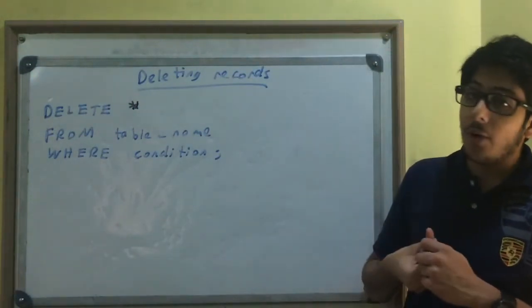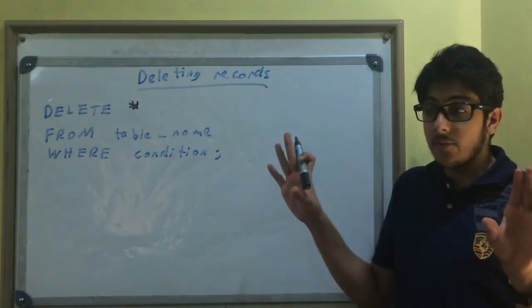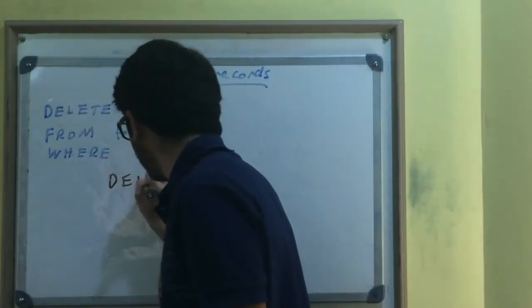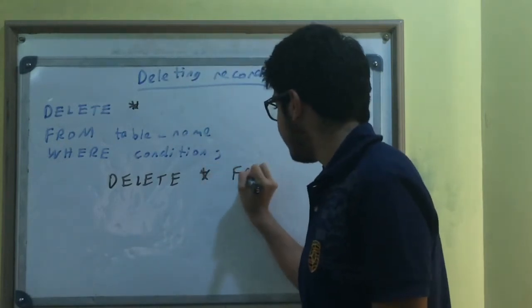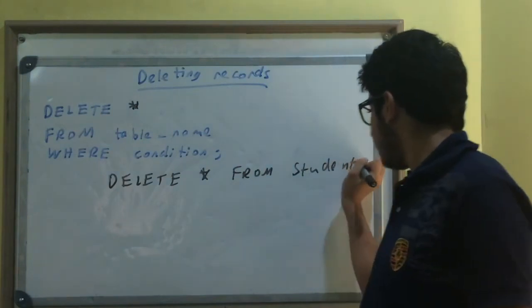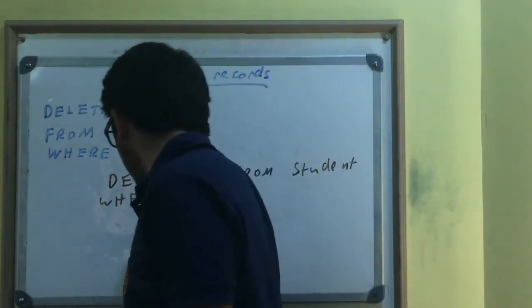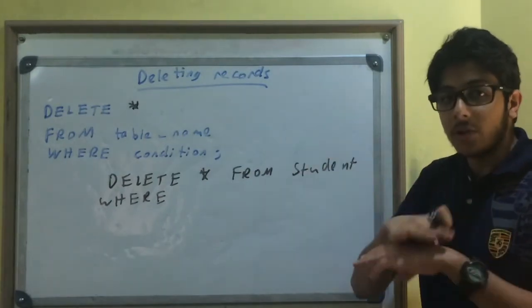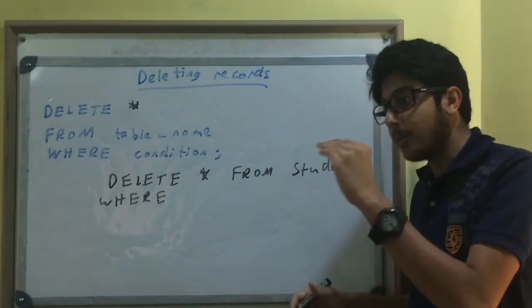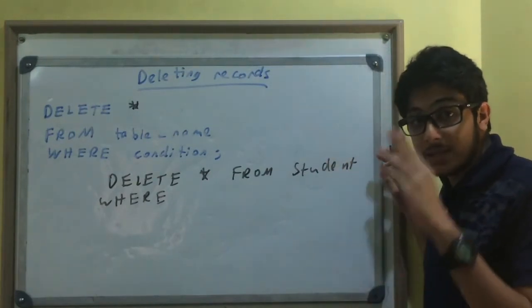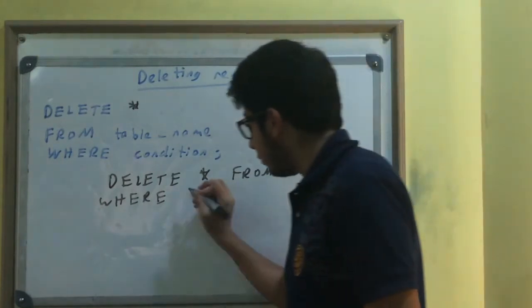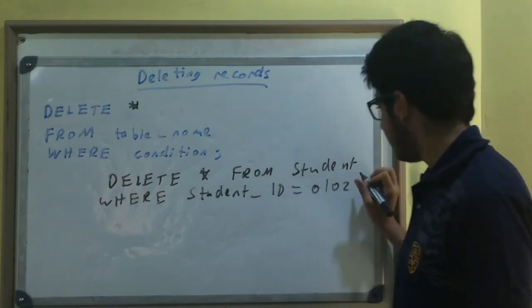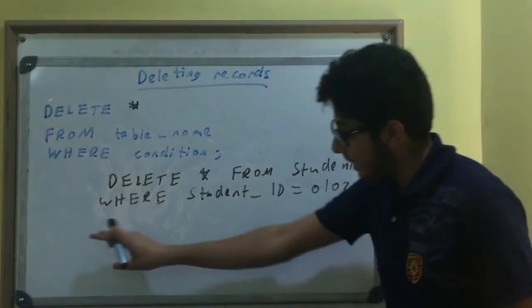So say Bob no longer goes to my school, I want to delete him from the table. So I'm going to delete the entire record. DELETE asterisk FROM student WHERE - if I said WHERE name is Bob and I have more than one student named Bob, it will delete all the Bobs. I don't want to delete all the Bobs, I want to delete that one Bob. So we use the primary key because that is unique to that one record. WHERE student_ID is equal to 0102, semicolon. And that should delete his entire record from the table.